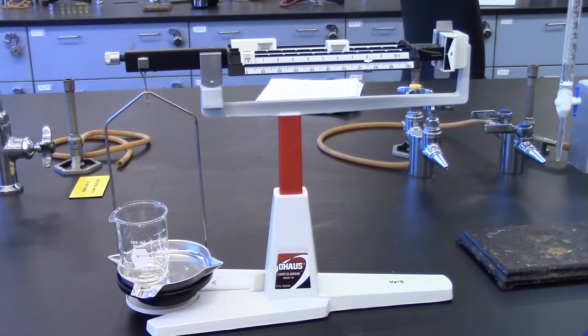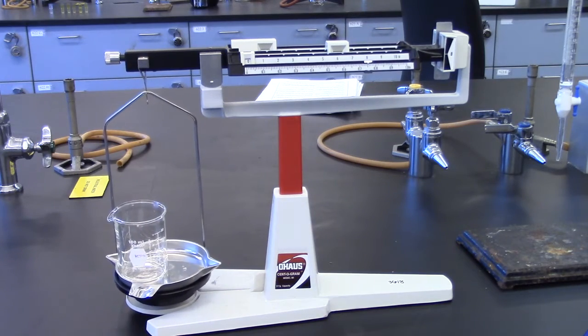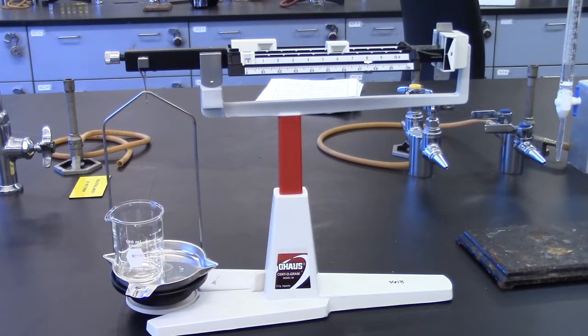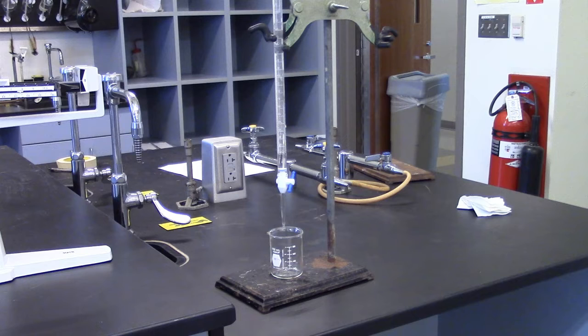After you have measured and weighed five 10 milliliter samples, empty the 100 milliliter beaker and dry. Weigh the empty, dry beaker and record mass.